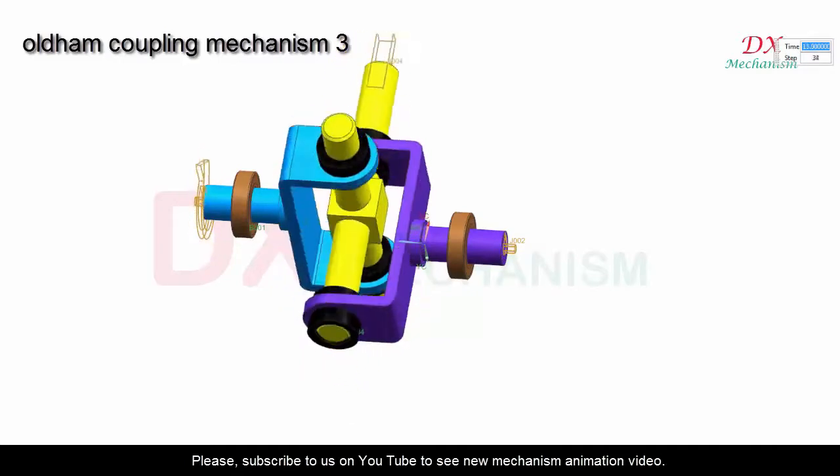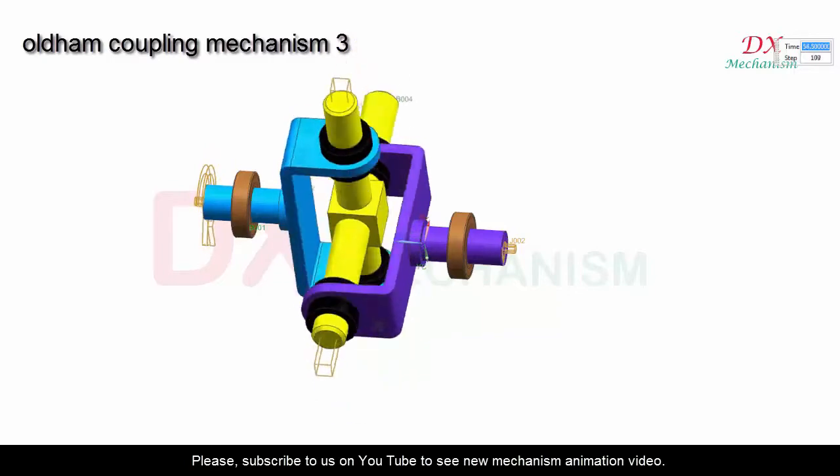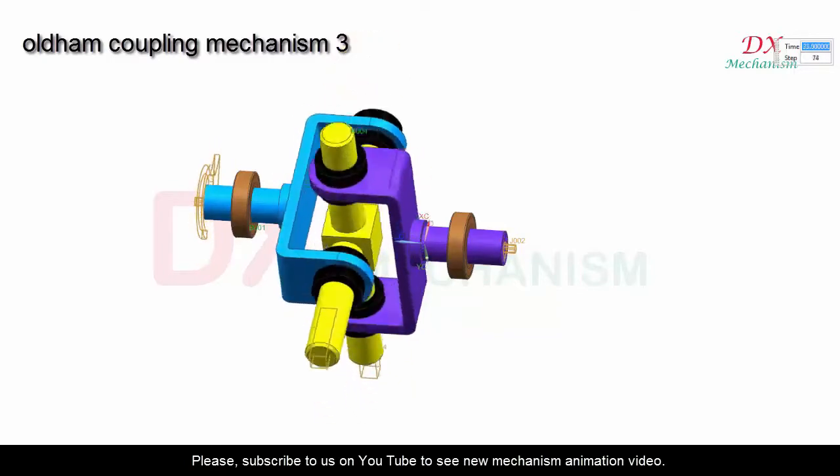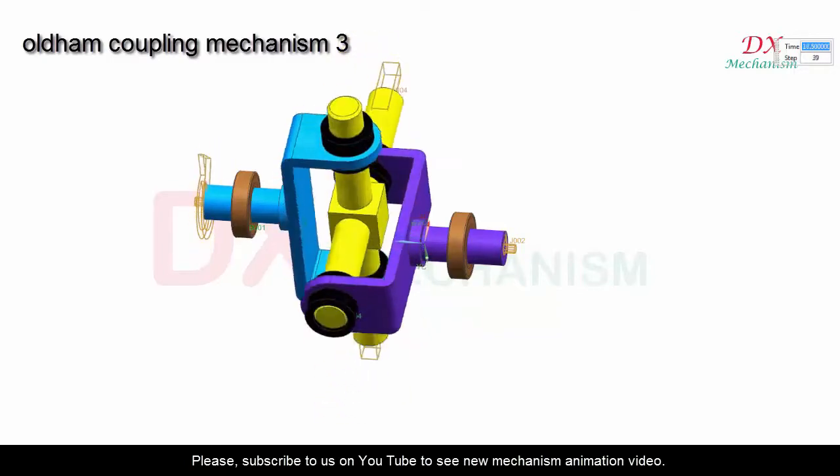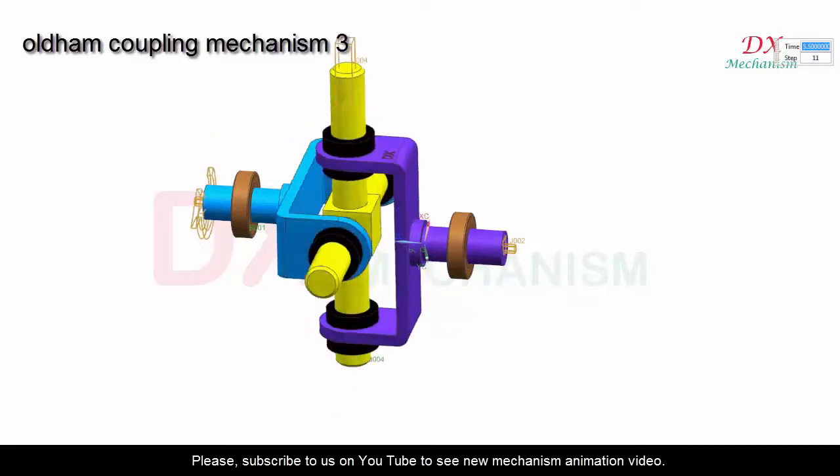the blue and purple parts. Brown color is the bearing. When the blue part rotates, the yellow part can slide on the bushing linear bearing. It transfers power and rotates the purple part.